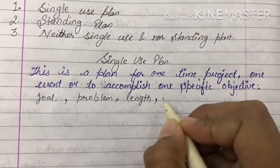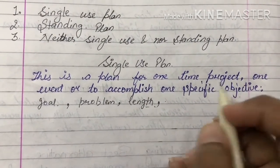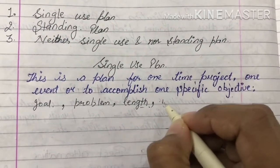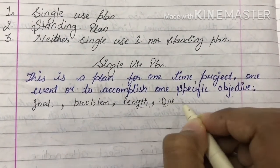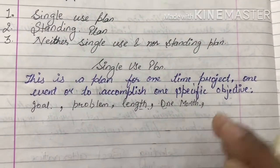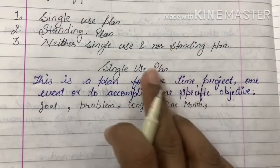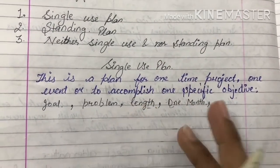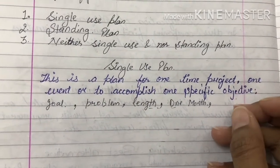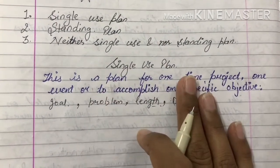Single use plan जो है वो project length की according depend करते हैं. अगर advertisement या one day, one month, या one year का plan है, जैसा भी project होगा, जितनी भी length उसकी होगी, single use plan की भी उसी हिसाब से length होती है. जैसे कि मेरा अगर marketing का कोई campaign है, तो उसी marketing campaign के साथ ही मेरा single use plan भी end हो जाएगा.